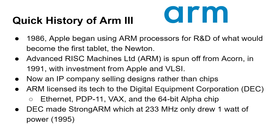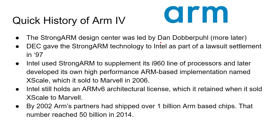Along the way, ARM licensed its tech to lots of companies, including Digital Equipment Corporation — DEC — which brought us Ethernet, the PDP-11, VAX, and the 64-bit Alpha chip. DEC made what was called the StrongARM, which ran at 233 MHz and drew only one watt of power. This was in 1995 — I was working for DEC at that time and was actually involved in projects looking at how to use the StrongARM in different products. The StrongARM Design Center was led by Dan Dobberpoul, and that's an important name to remember for a little later.